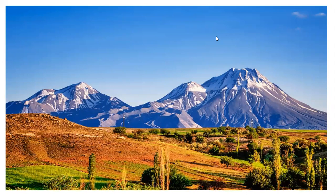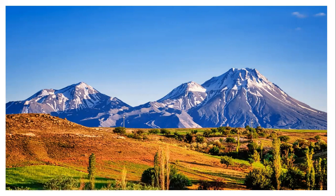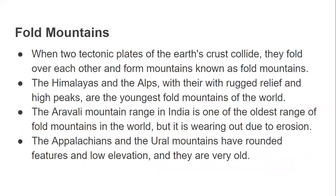Mountains are sometimes found in lines known as ranges, and many mountain systems consist of a series of parallel ranges running for hundreds of kilometers. Looking at this picture, you can observe the small summit and broad base. The landform with a small summit, broad base, high elevation, and steep slopes is known as a mountain. There are three types of mountains: fold mountains, block mountains, and volcanic mountains.